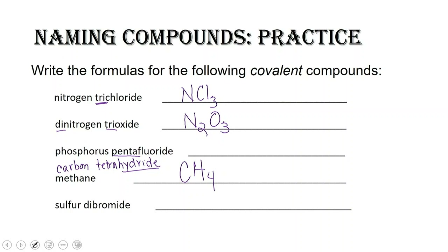The third problem is phosphorus pentafluoride. I've got phosphorus and fluoride — fluoride is the name of fluorine in a compound. 'Phosphorus' has no prefix so it's just one phosphorus, and 'penta' is the prefix for five. So this compound is PF5.